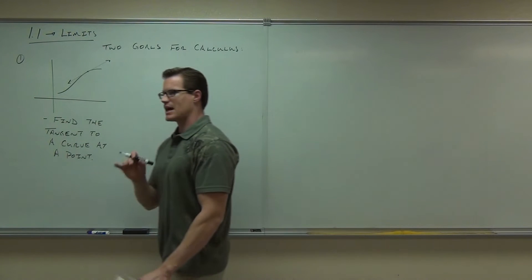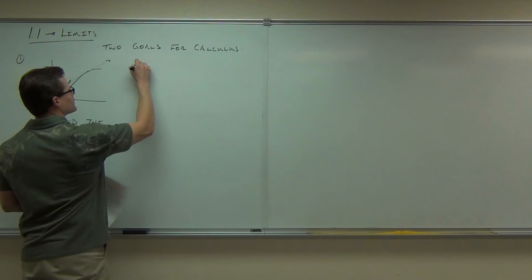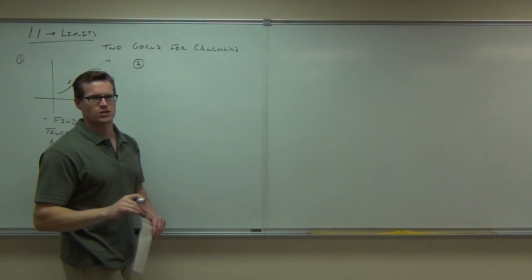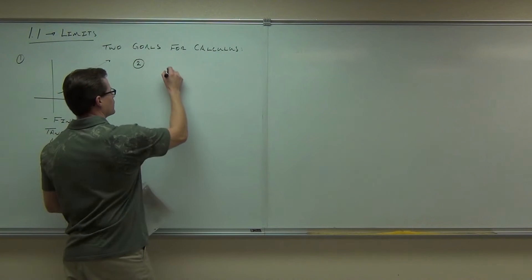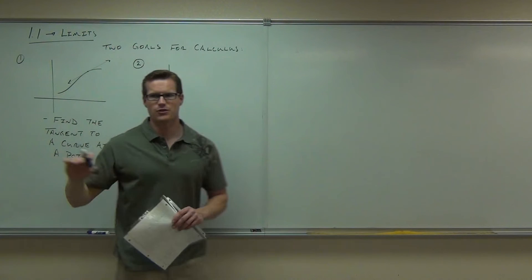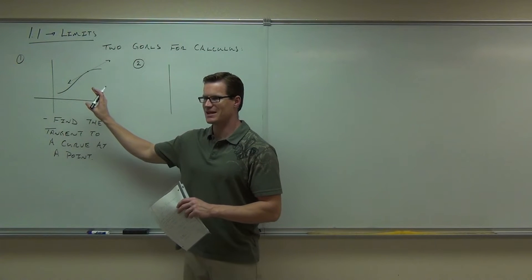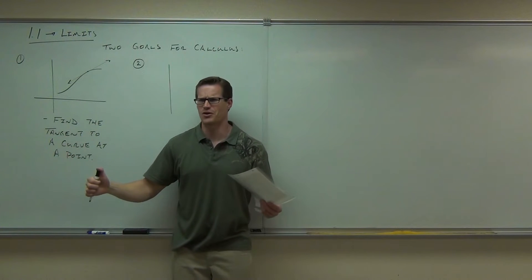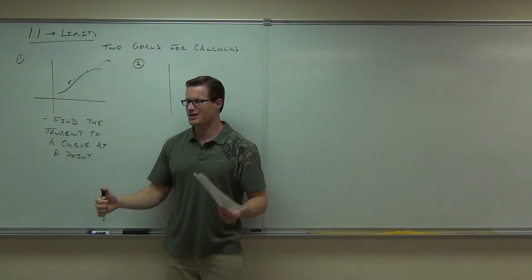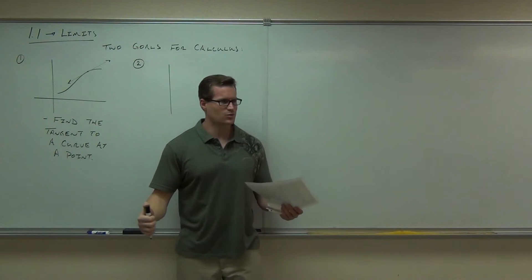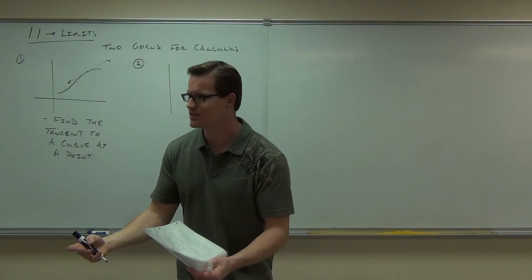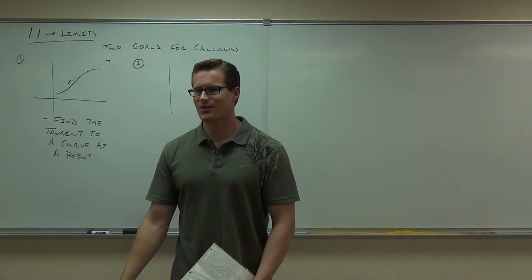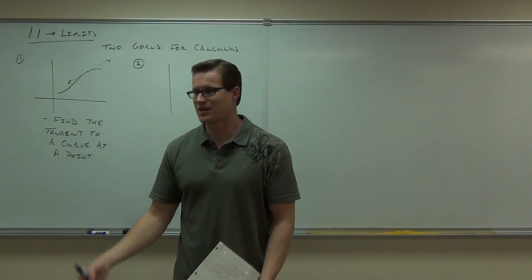Goal number two, which is the last half of our class, is also a really interesting question. By the way, this stuff is stuff you can't answer in any other class — you can't do this with algebra. There's no way you can find the slope of a curve with algebra. Slope of a straight line? Easy. Slope of a curve? Wow, it's weird. Is that not an intriguing idea? If you're in this class you'd be like, "oh, that's kind of cool — how are you going to find the slope of a curve?" Calculus.